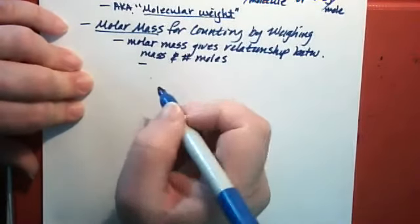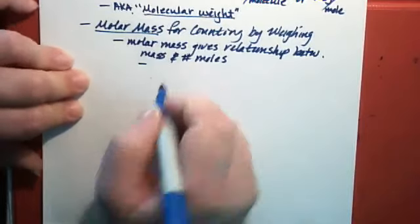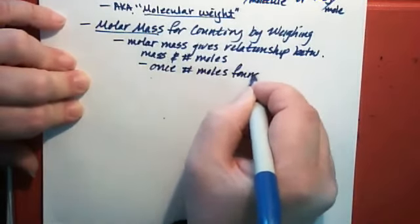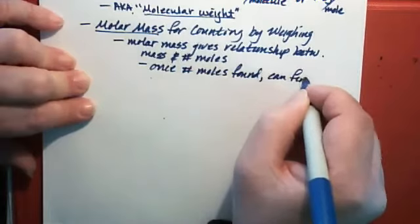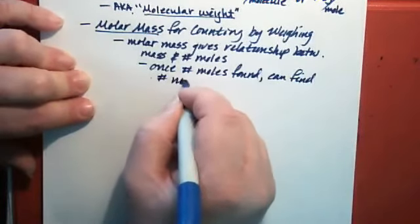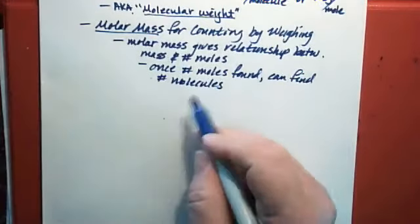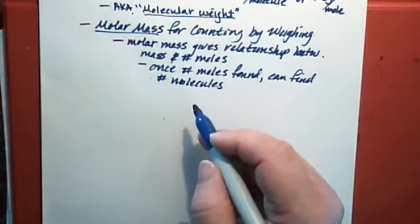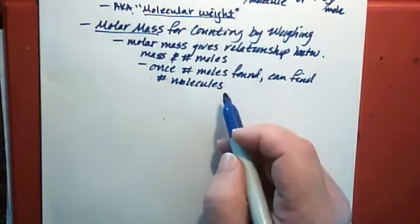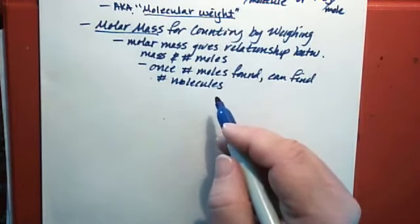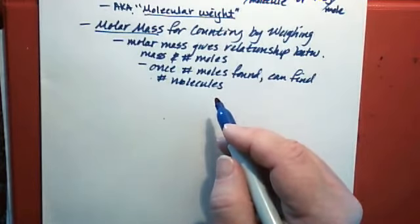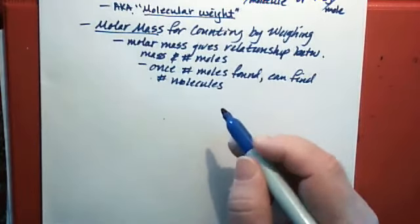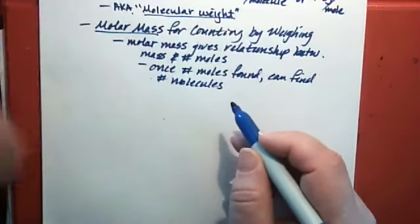Once the number of moles is determined, then you can actually find the number of molecules if you want to. So you can find a number of molecules or a number of parts of molecules. If you're dealing with glucose, you could find out not only how many glucose molecules there are in a sample, but you could find out how many carbon atoms there are in the sample because we know how many carbon atoms there are per molecule with glucose. If we know how many molecules of glucose, you just multiply by six and you've got the number of carbon atoms.